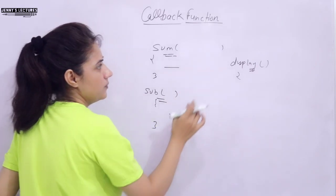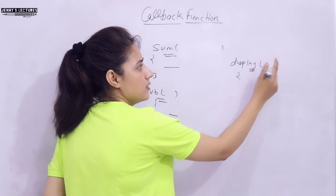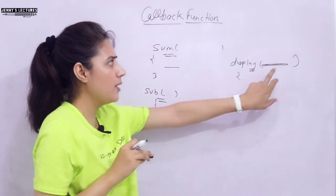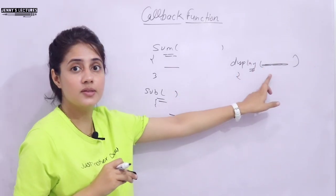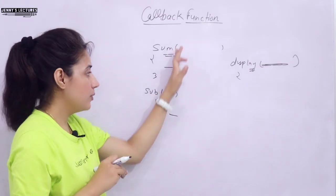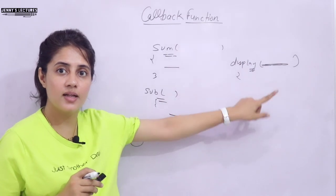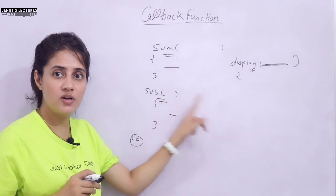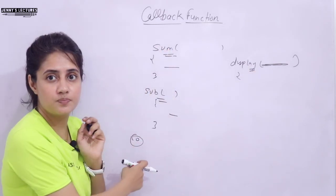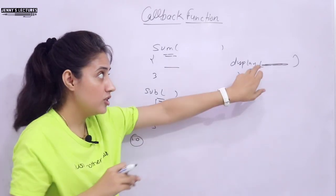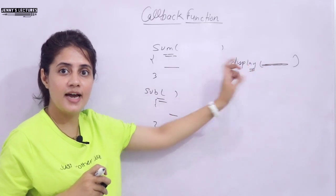Here we have these two functions, and the display function is going to call them. At runtime, whatever address you pass — if you pass the address of the sum function, it will call sum; if you pass the address of subtract, it will call subtract. If we have 10 functions, from one function we can call all 10 one by one, just by passing the address of each function at runtime. The display function does not know at compile time which function it will call — whatever address you pass, that function gets called at runtime.